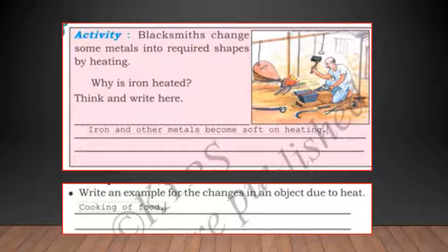Heat transmits from one object to another. Example, ironing the clothes. When you're ironing the clothes, the iron box is hot. When you put it on your clothes, it heats up the cloth and makes it stiff. Heat transmits from one object to another, usually from higher temperature to lower temperature.